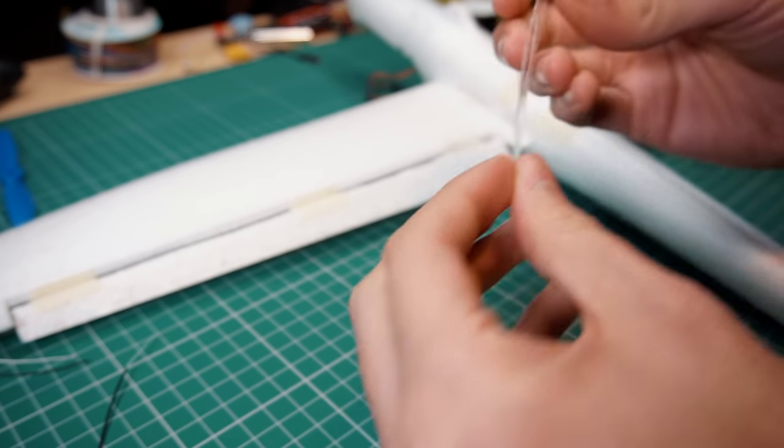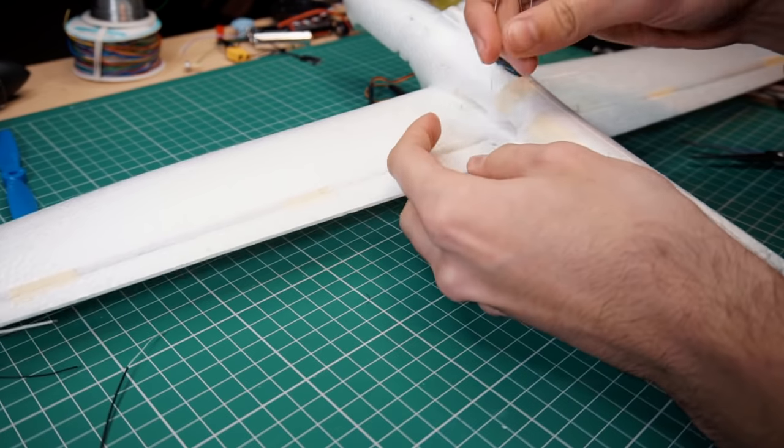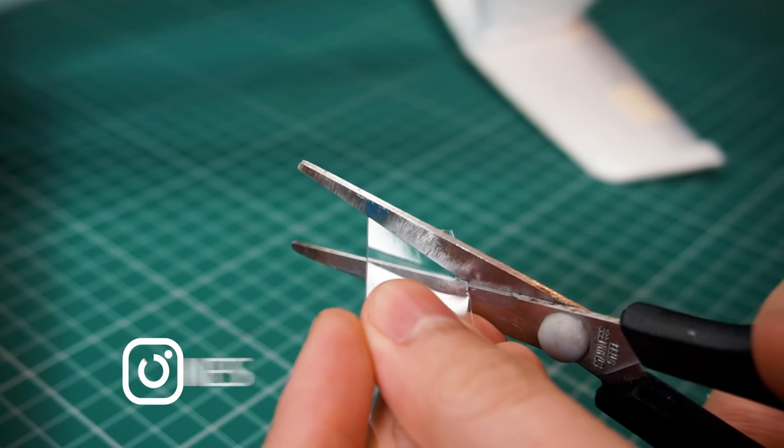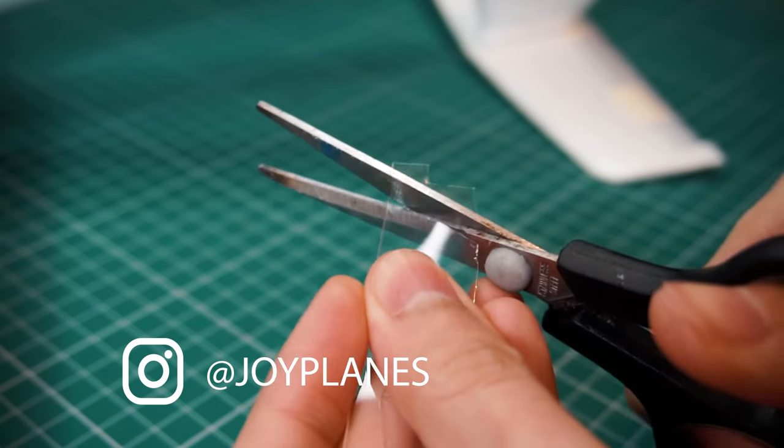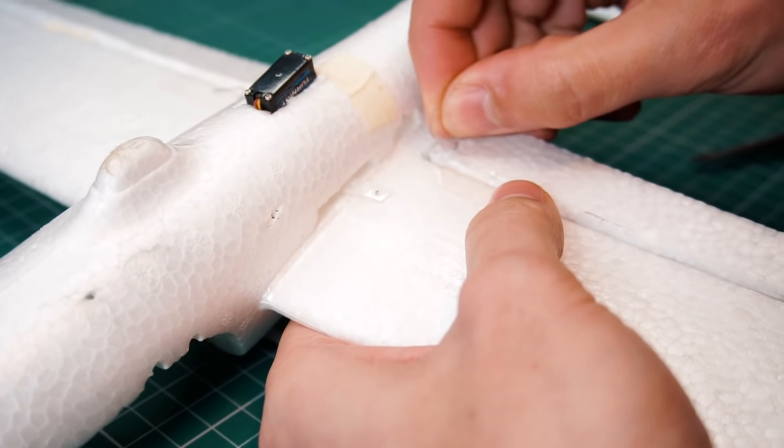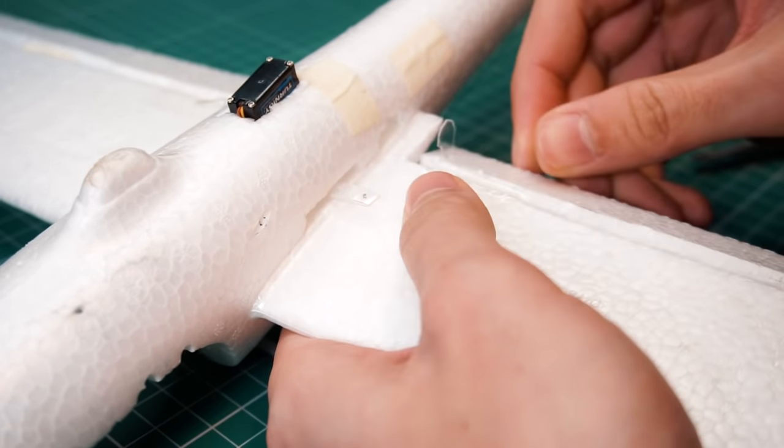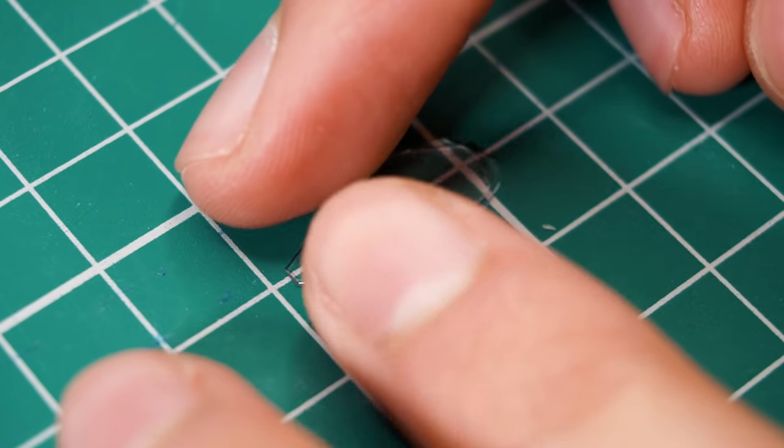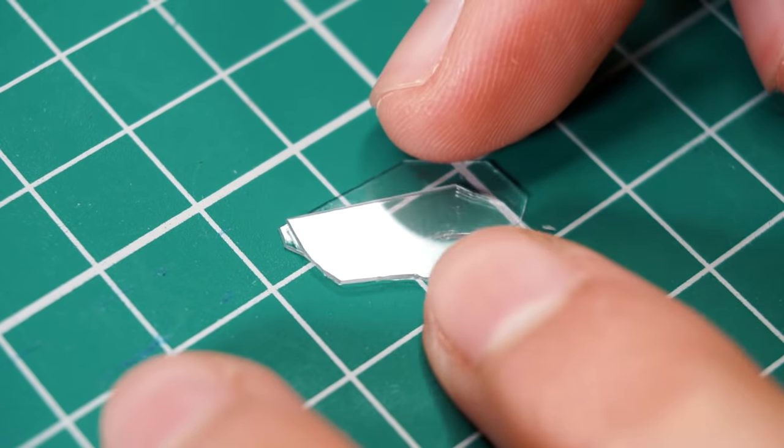Good, I still have one fix to make and it's the control horns for the ailerons. These are going to be connected to the servo and that way we can control the ailerons. This can be made out of plastic. Any kind of plastic sheet will do. You can use an old credit card or in my case I'm using plastic from any packaging.